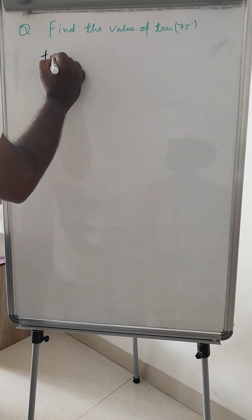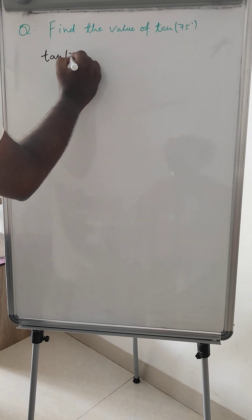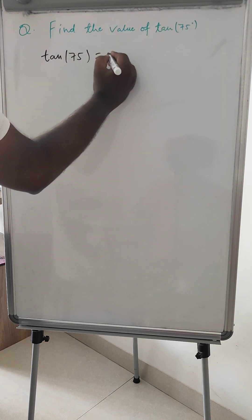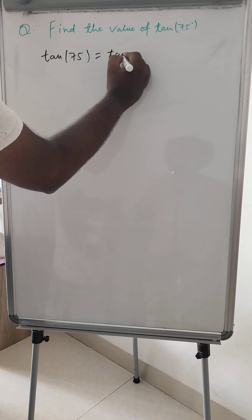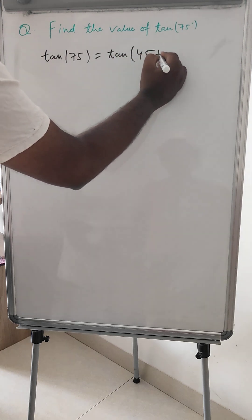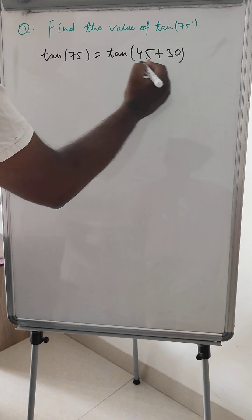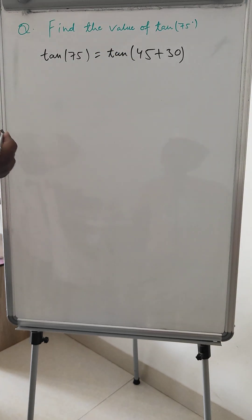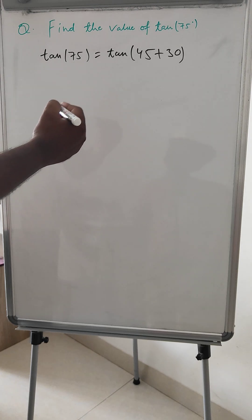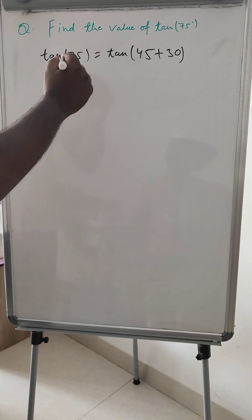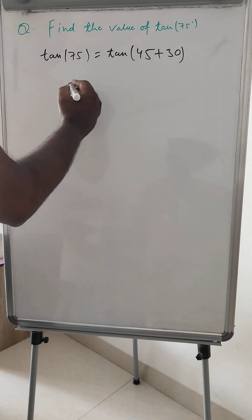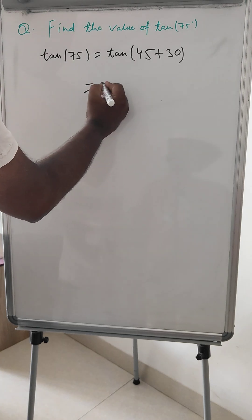Tan 75 equals tan(45 + 30). This uses the tan(a + b) formula. The formula is: tan(a + b) equals (tan a + tan b) divided by (1 - tan a × tan b).